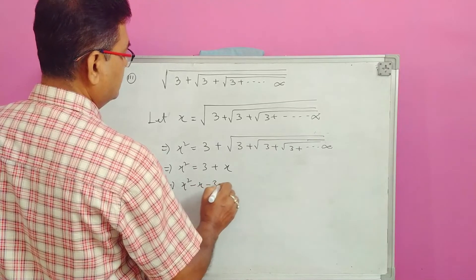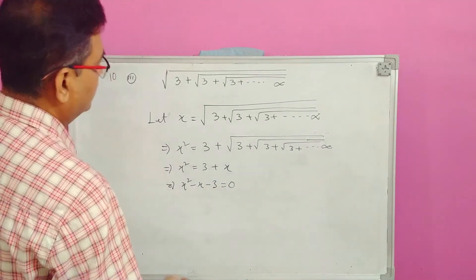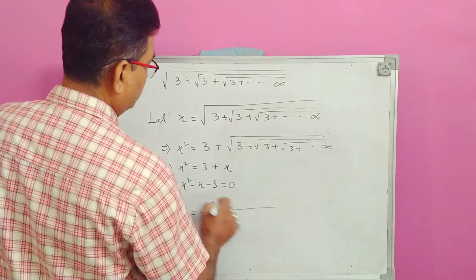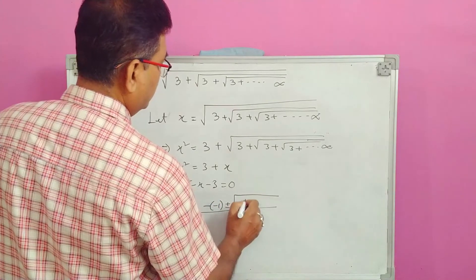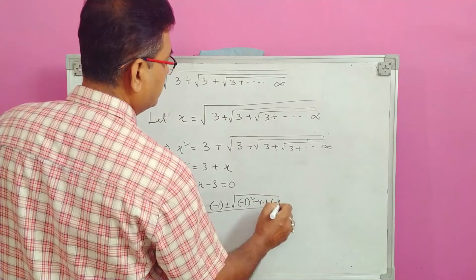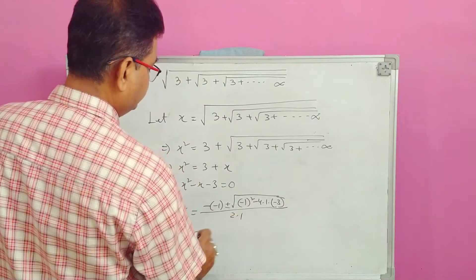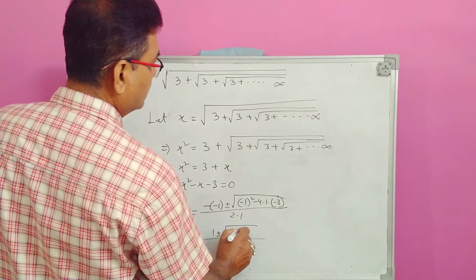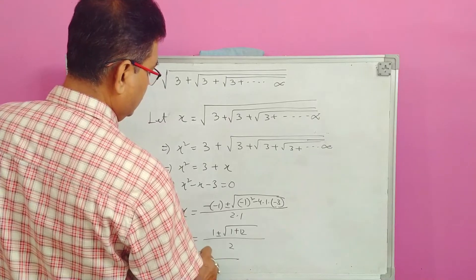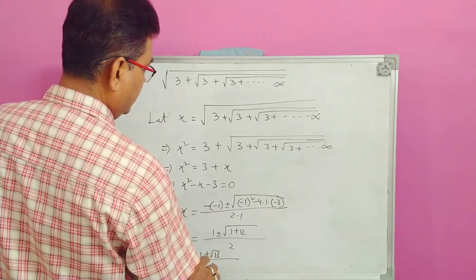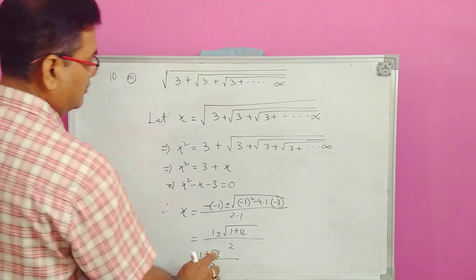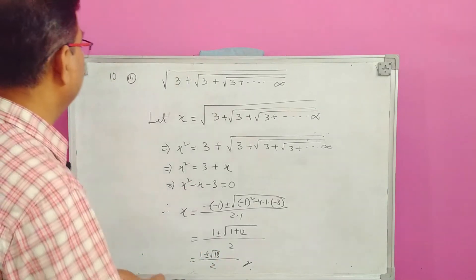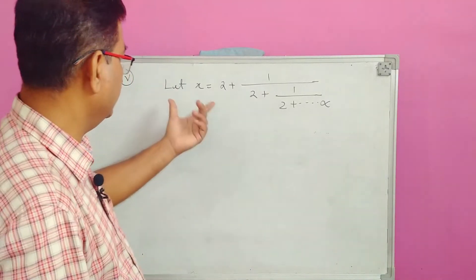x² minus x minus 3 is equal to 0. Using the quadratic formula: minus b, where b equals minus 1, so minus b equals 1. Then plus or minus the square root of b² minus 4ac, where c equals minus 3 and a equals 1. That gives 1 plus or minus the square root of 1 plus 12 — so x equals 1 plus or minus root 13, divided by 2.